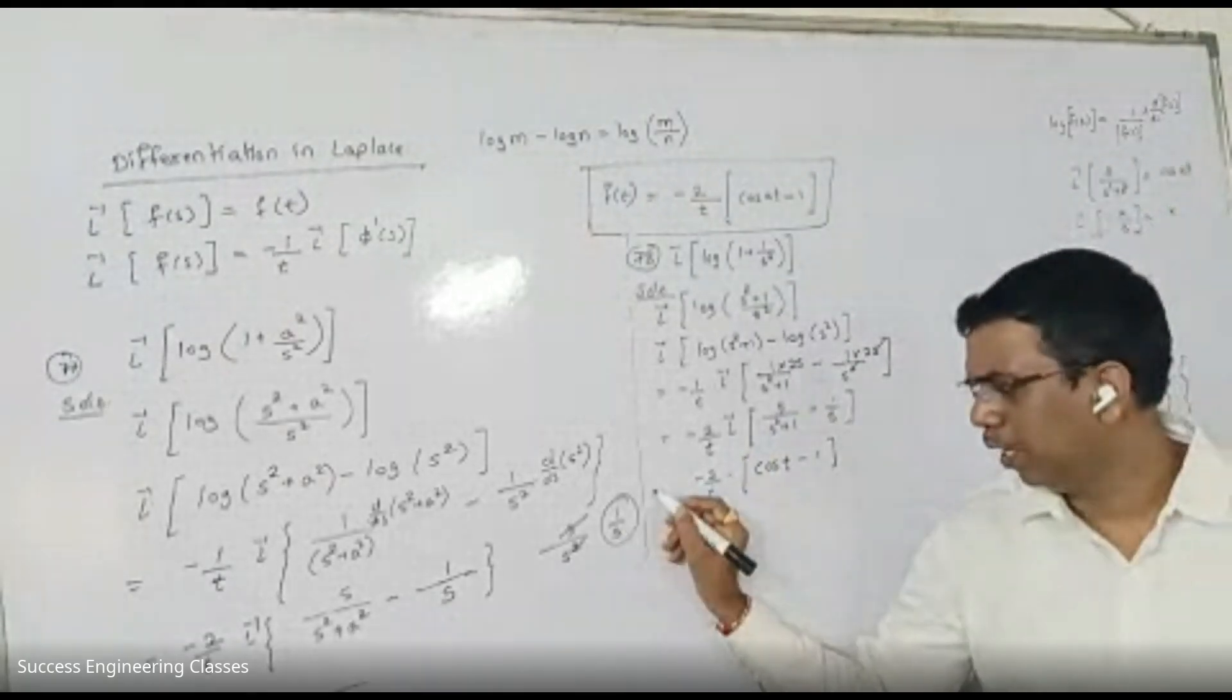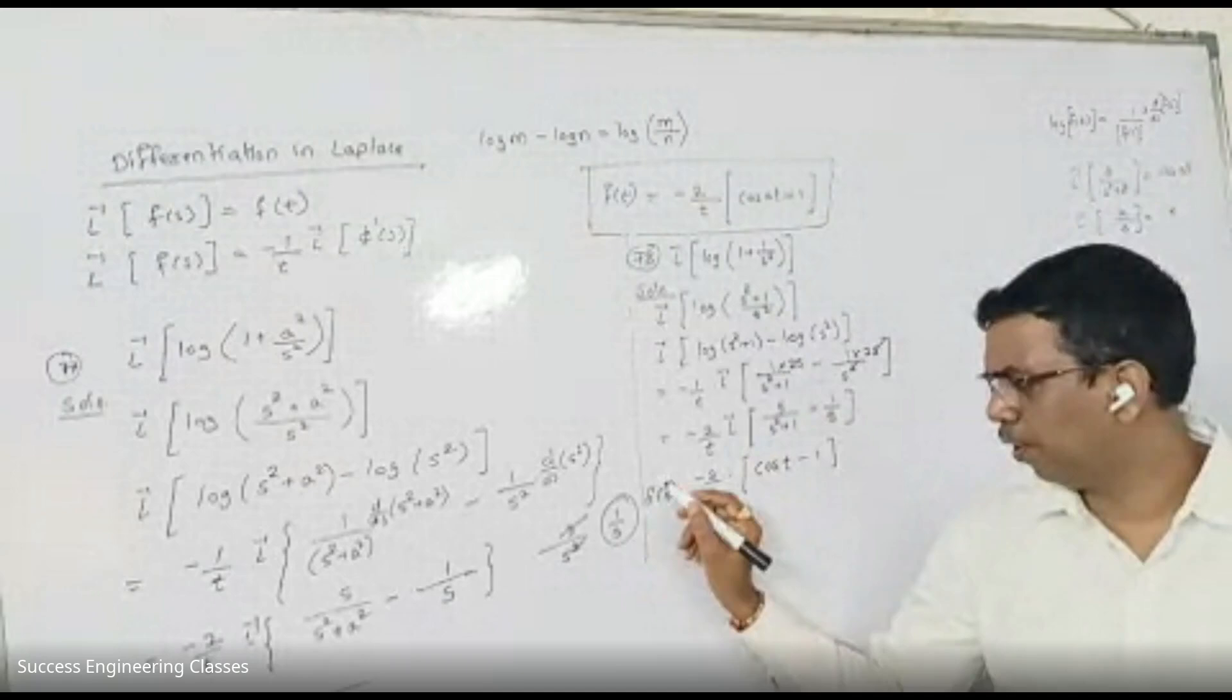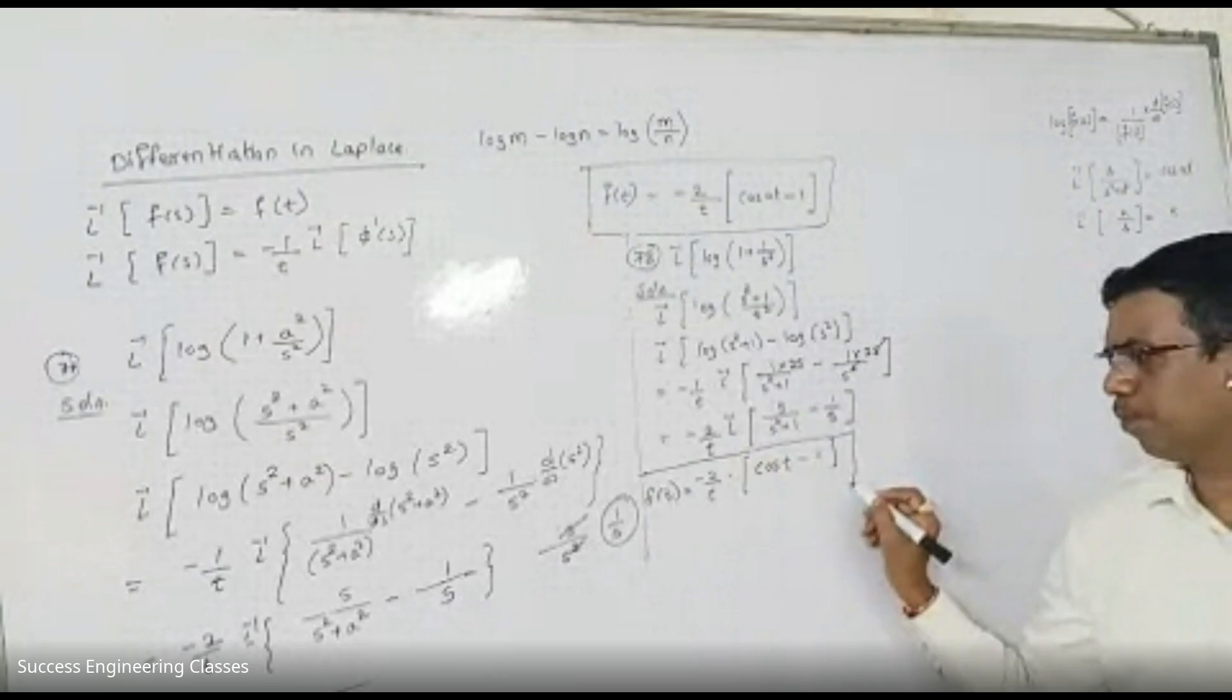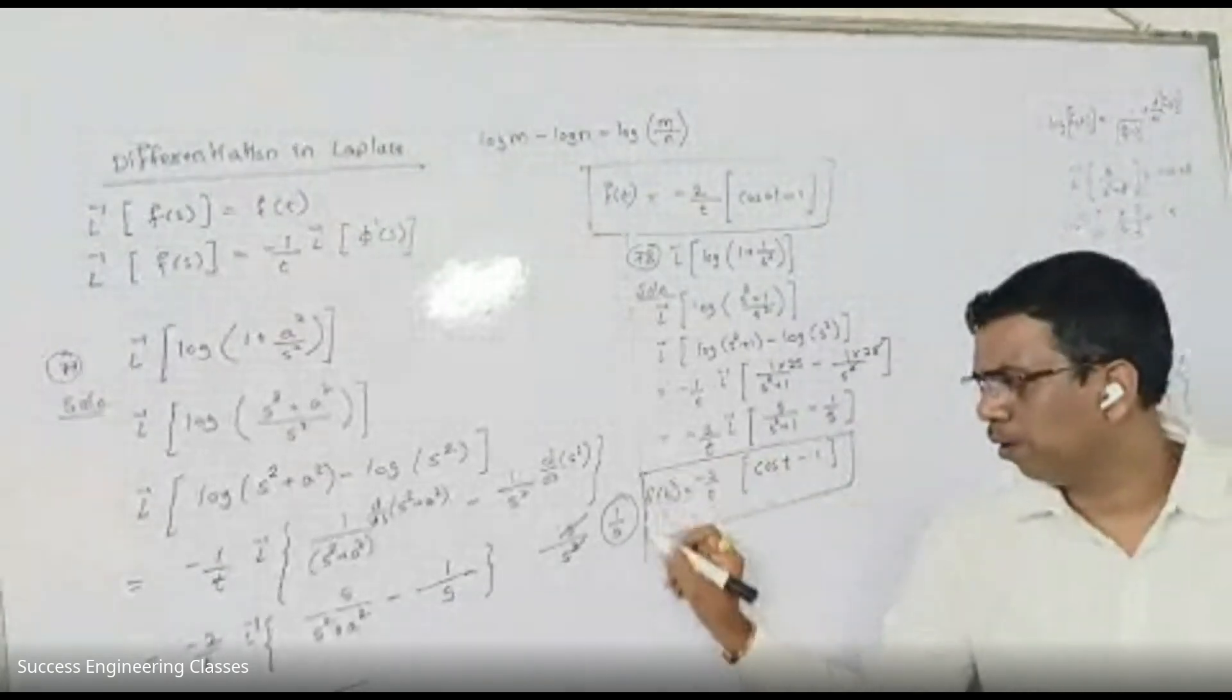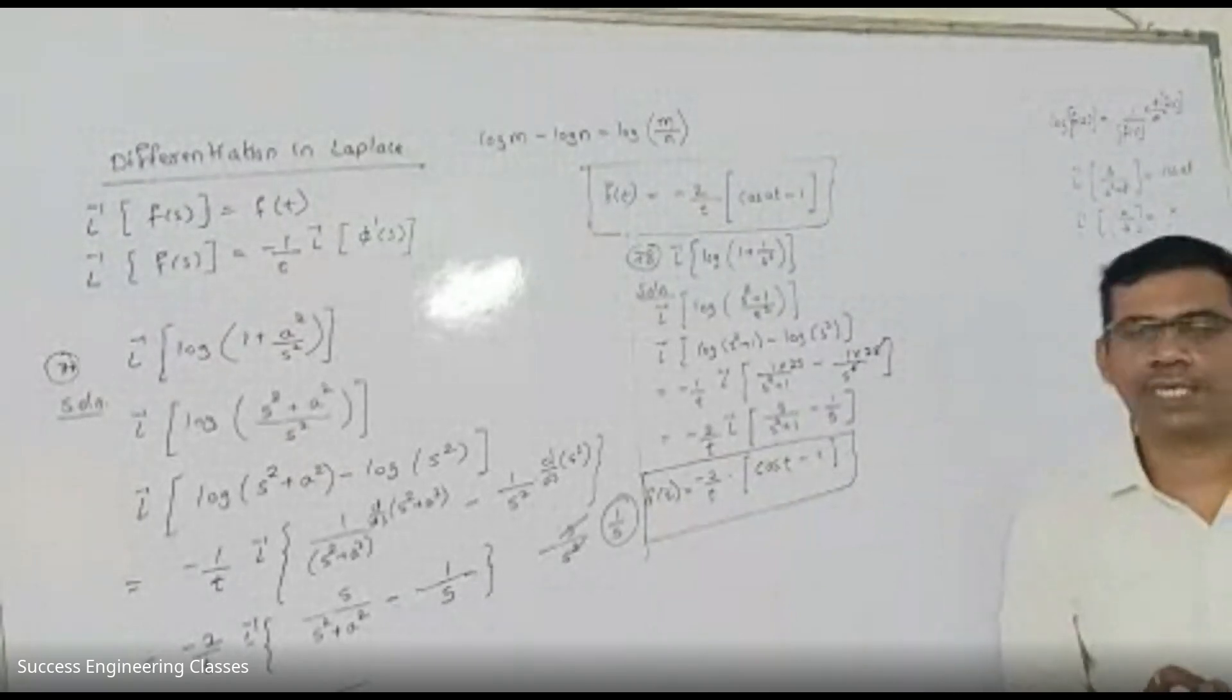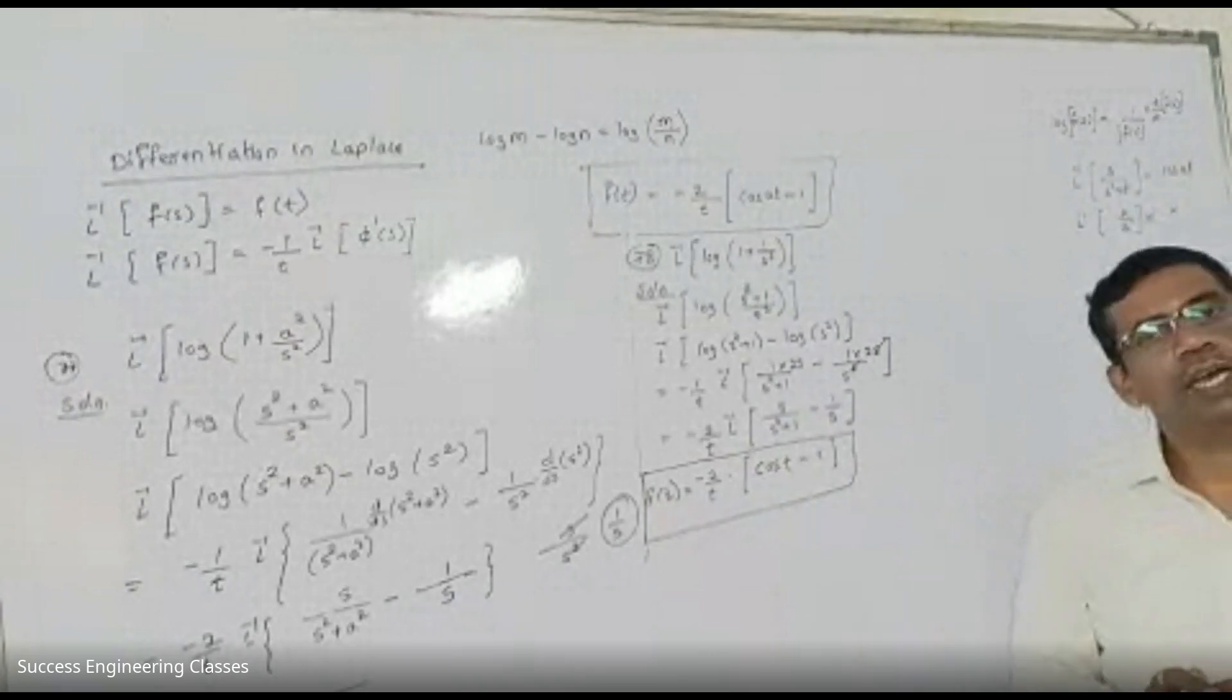And what is Laplace inverse of 1 by s? This one. So we can say, the answer is, f of t is equal to minus 2 by t, cos t minus 1. So we can move forward and continue.